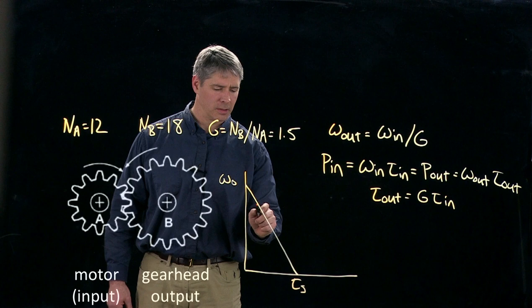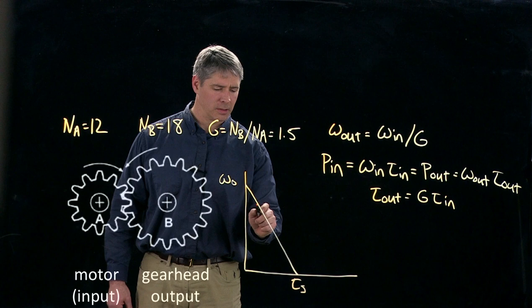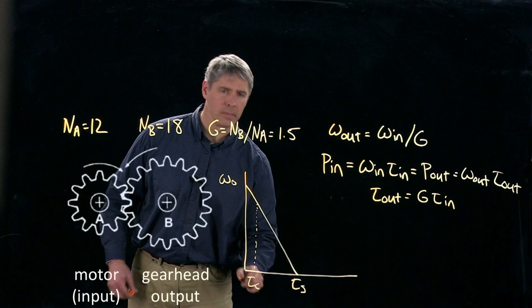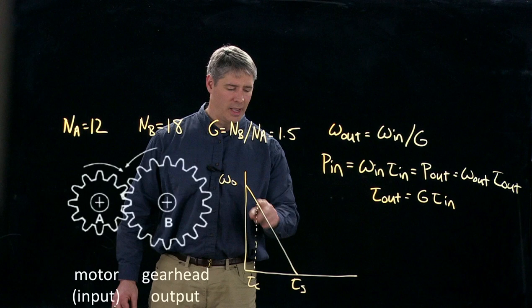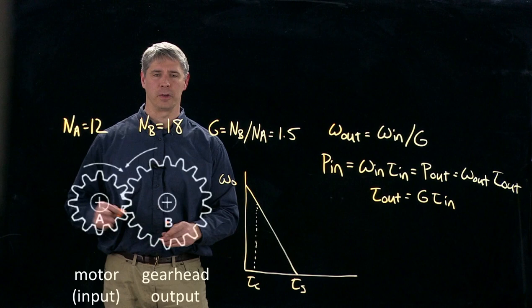And it would have a continuous operating region so that everything to the left of this vertical line can be operated continuously and anything under the triangle can be operated intermittently. So this is the speed torque curve for the original motor.